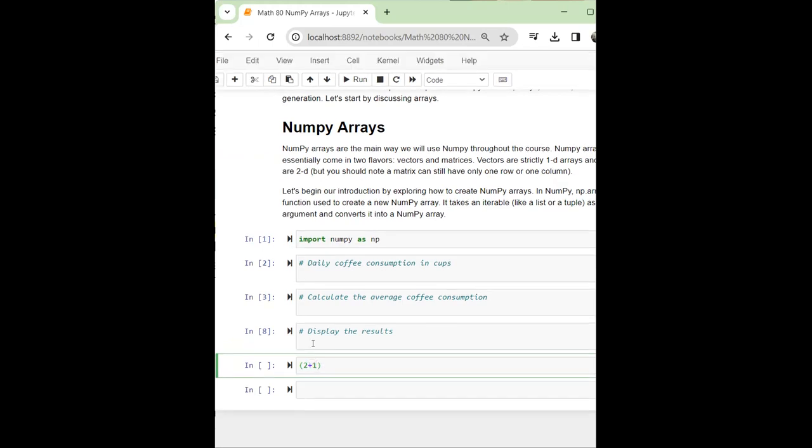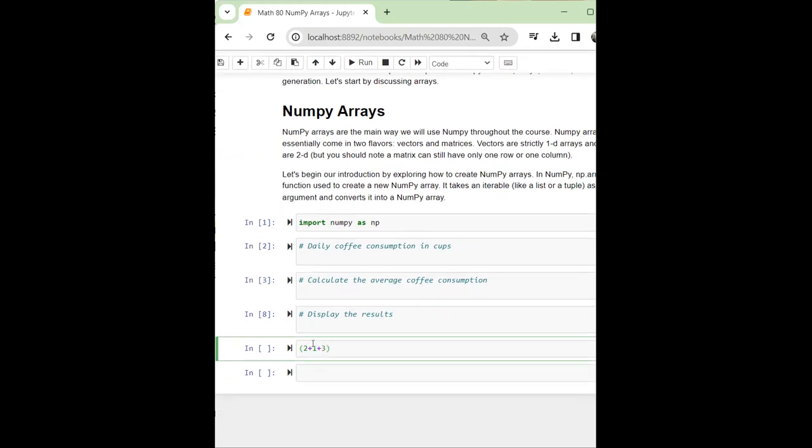So take a look here, I have to take all of these numbers, 2 plus 1 plus 3 plus 2 plus 2 plus 1 plus 3, and then divide it by how many numbers do we have? 2, 4, 6, and 7, divide it by 7, and we get the result 2.